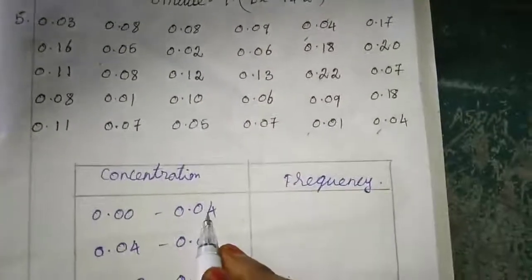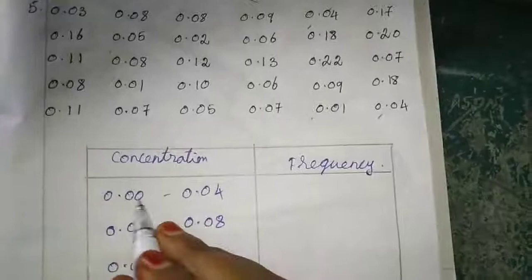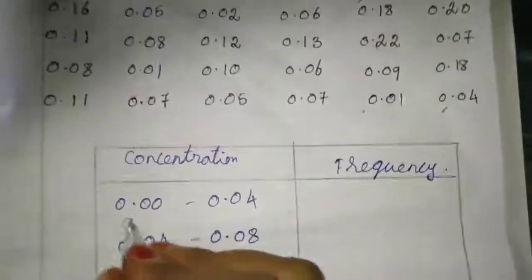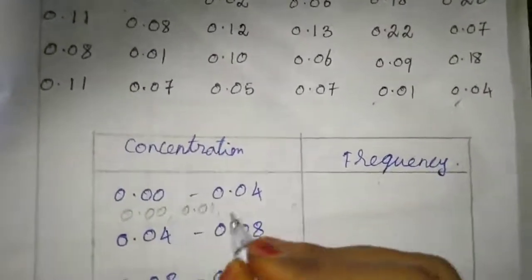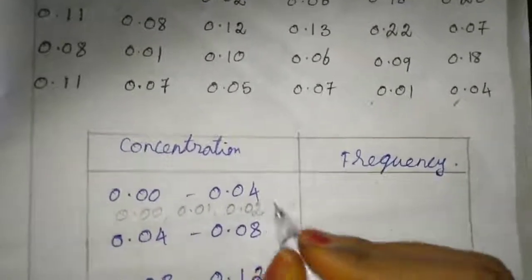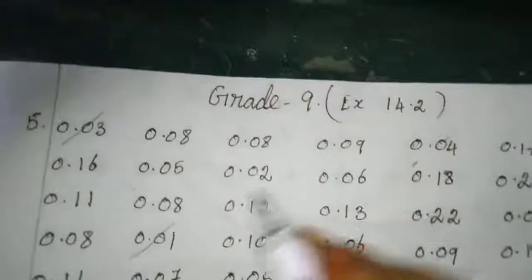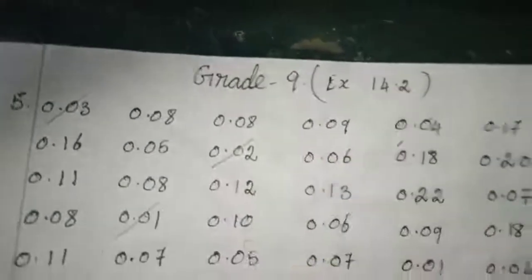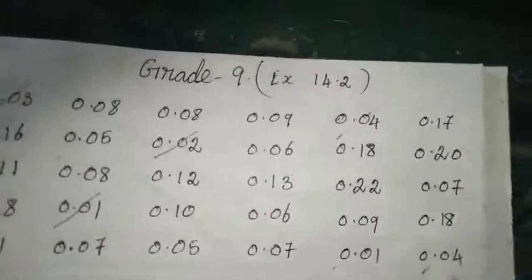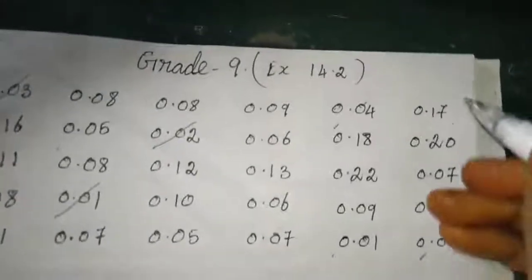Now I am going to refer 0.00 to 0.04, that means 0.00, 0.01, 0.02 as well as 0.03. Now we will refer the data. See here: 1, 2, 3, 4, so we have 4.